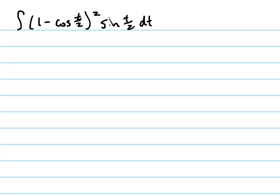So we're going to let u equal this right there: 1 minus cosine of t over 2, which means du/dx, I'm sorry, du/dt equals 1 half sine of t over 2.